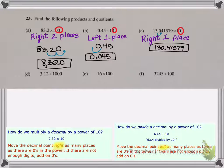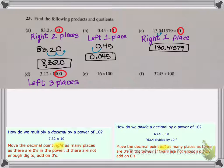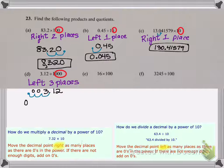Let's look at part D. I'm dividing so I know I'm moving to the left, and 1000 has three zeros so I'm moving to the left three decimal places. Starting with 3.12, if I go three spaces to the left I'm going to have to fill in two of those blank spaces with zeros. So this becomes 0.00312. Notice how I entered a zero in that ones place.